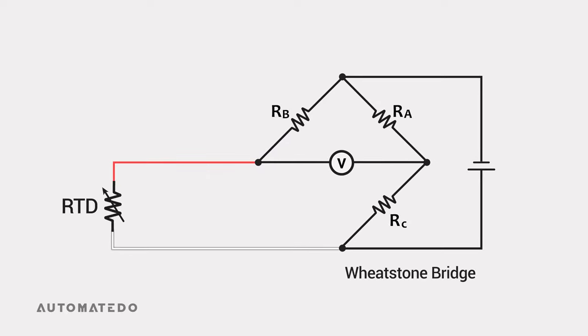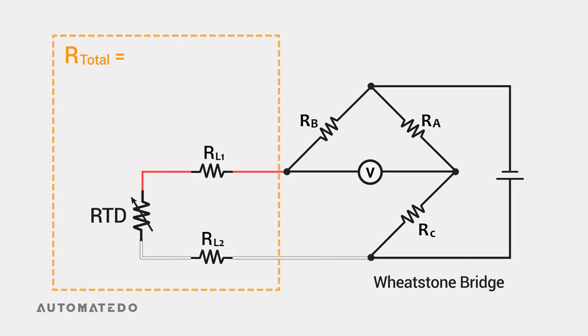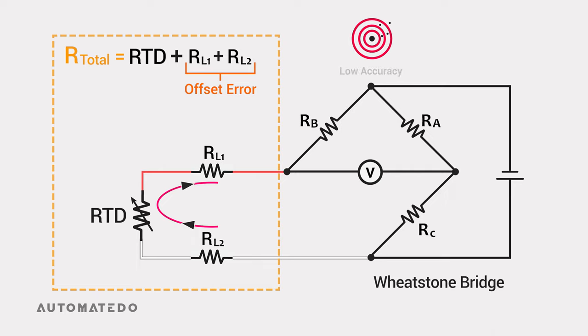First, let's attach the RTD element to one of the Wheatstone bridge's legs. Let's begin with the two wire configuration, where each end of the RTD element is connected to a single lead wire. Due to the length of the wire and the connection points, the lead wires have their own electrical resistance. Since it's a series circuit, the total resistance includes the RTD element resistance plus the resistances of lead wires, so we'll have a higher value than expected, which introduces offset errors.